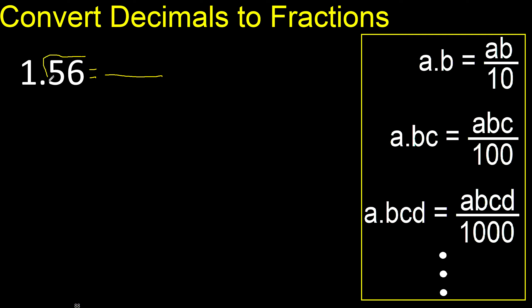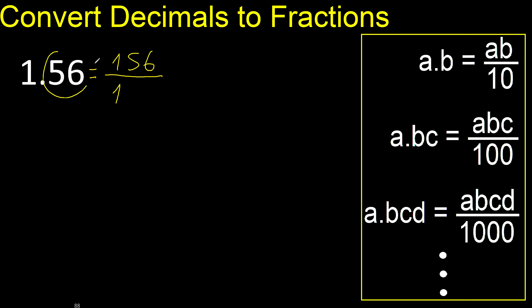First, all the number without point. Here always number 1. After the point there are two numbers, therefore two zeros. Can be simplified because can be divided by the same number.